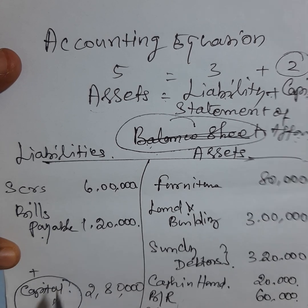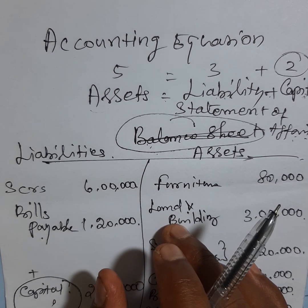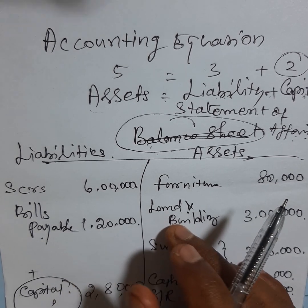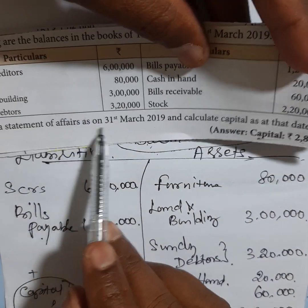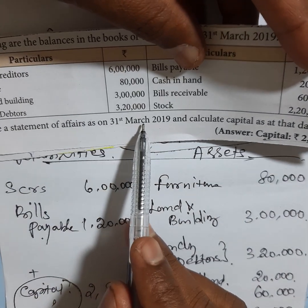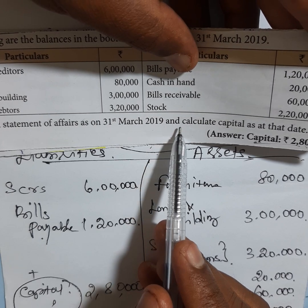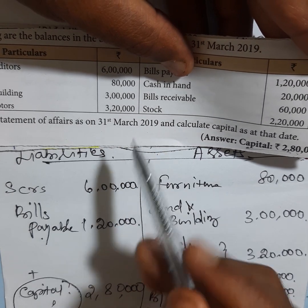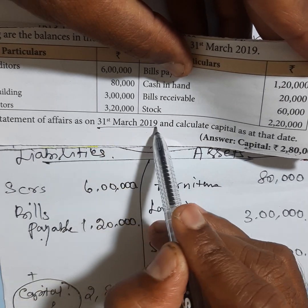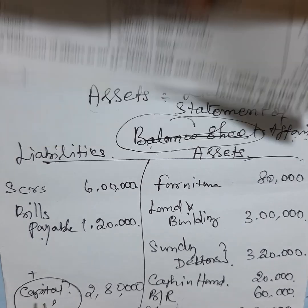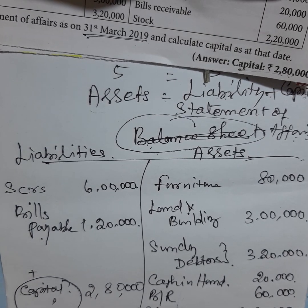We find the capital. What is the date? That is the opening date. If you are on the opening date, prepare Statement of Affairs in March. Top 1st of March 2019. Once it was prepared, we find the relationship with the capital. This is the closing capital.